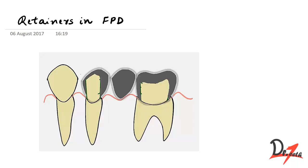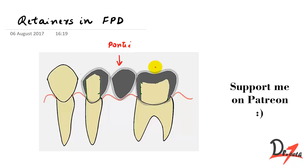In the last video on FPD, which was the first video, we had studied the components of the FPD. Let us quickly have a look at the components of FPD once again. This is the tooth we want to replace, and this is the pontic. These things on either side are called retainers.